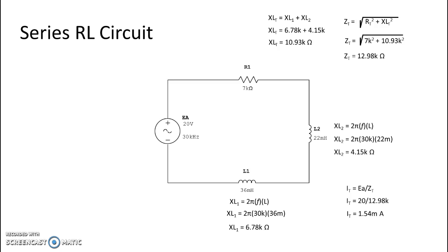So resistance, of course we take the ohmic value of our resistor, multiply it by total current. That's 7000 multiplied by 1.54 milliamps and I get a voltage of 10.78 volts. I do the same thing for the voltage for L1.